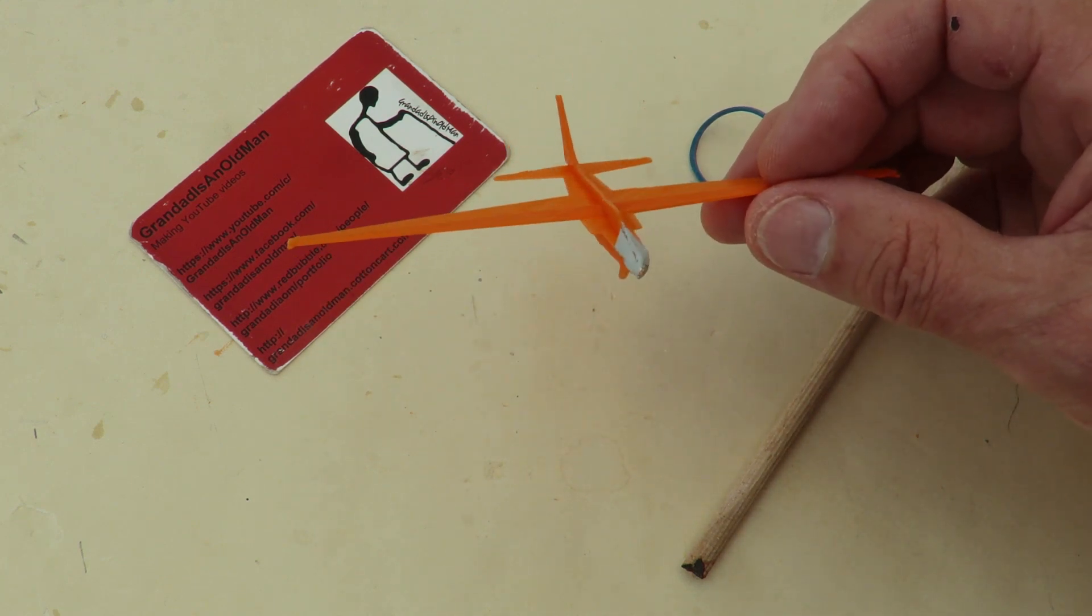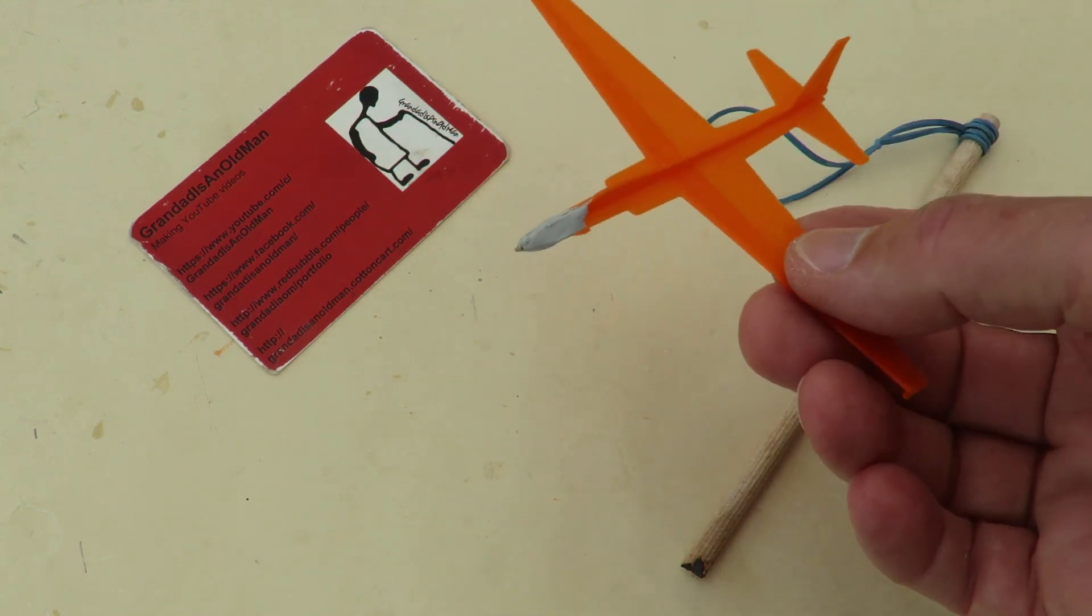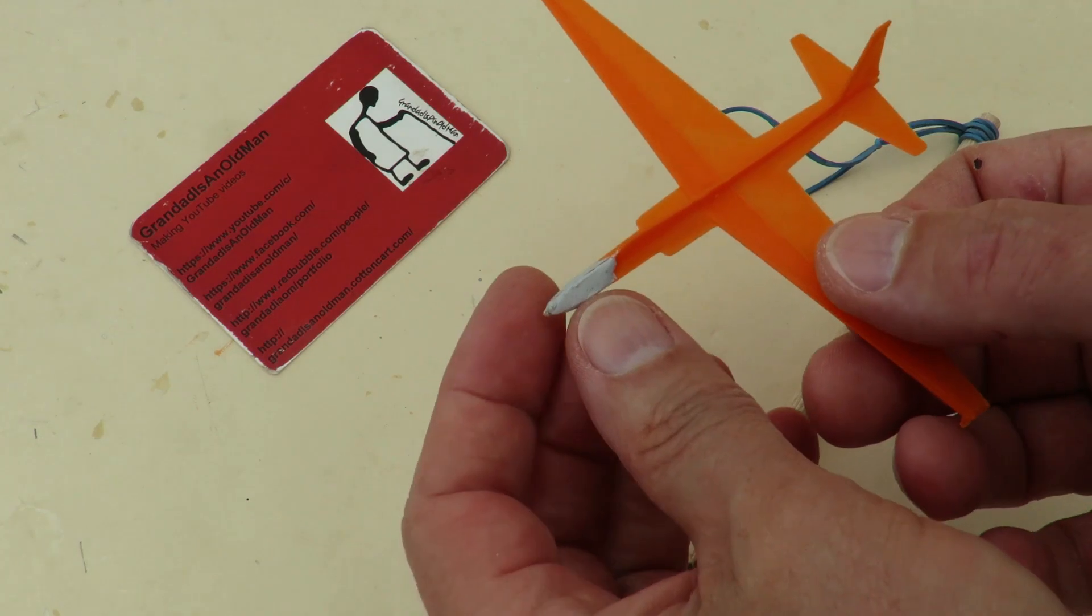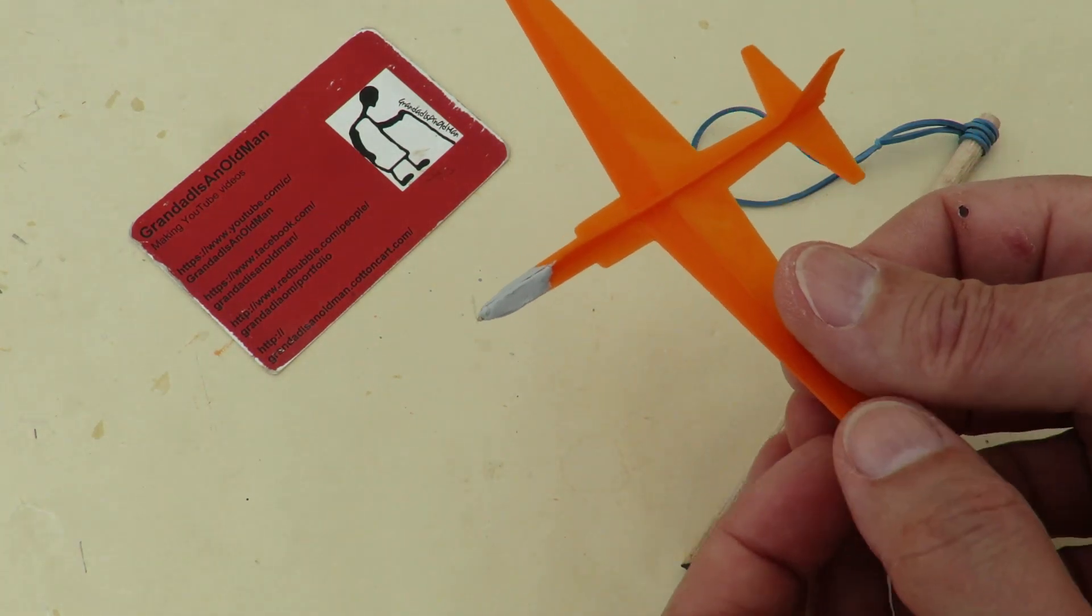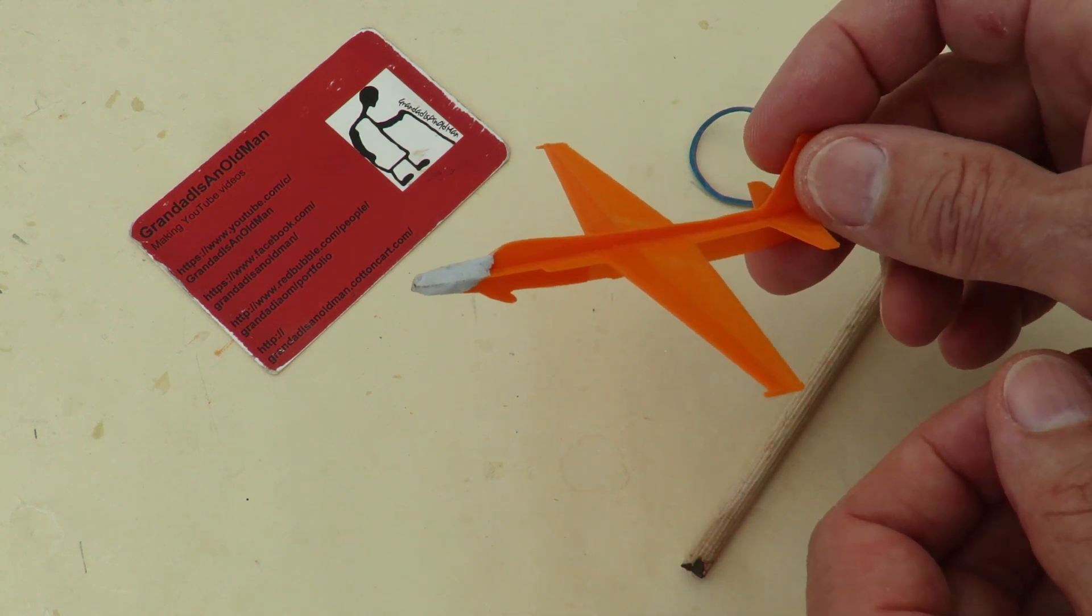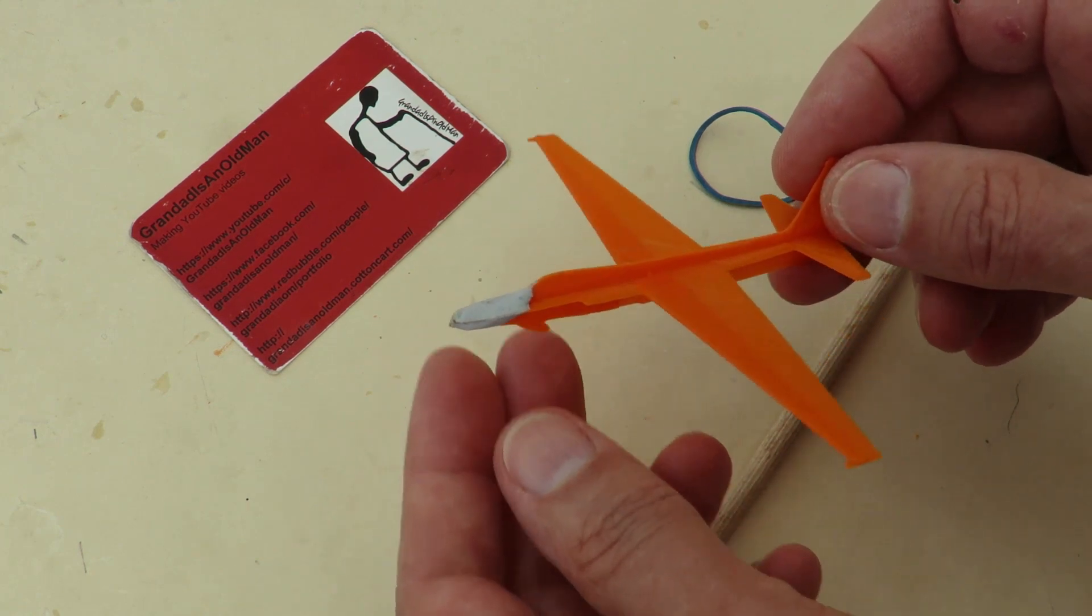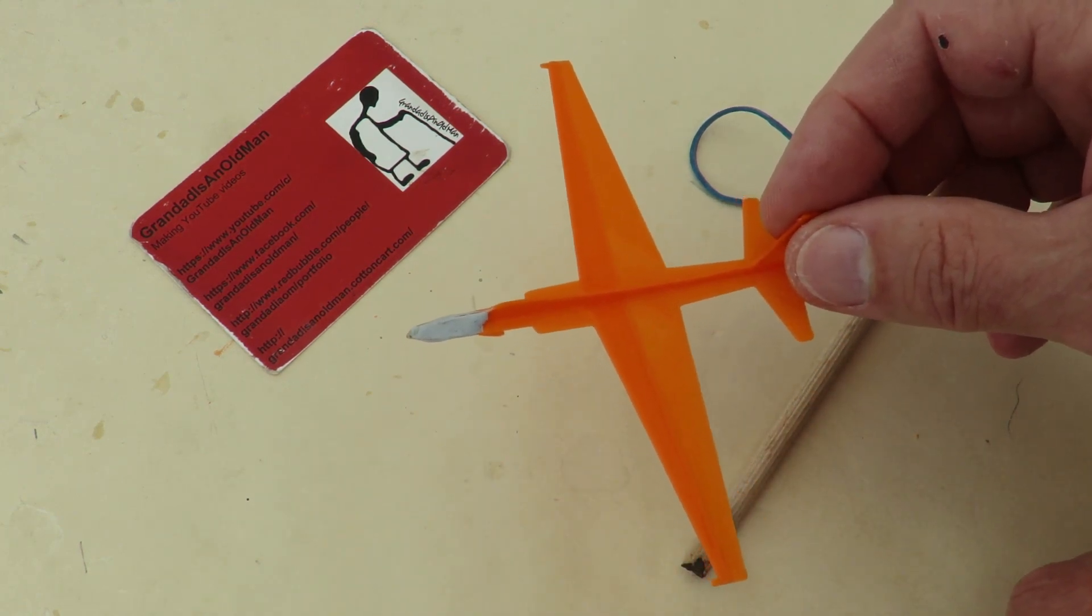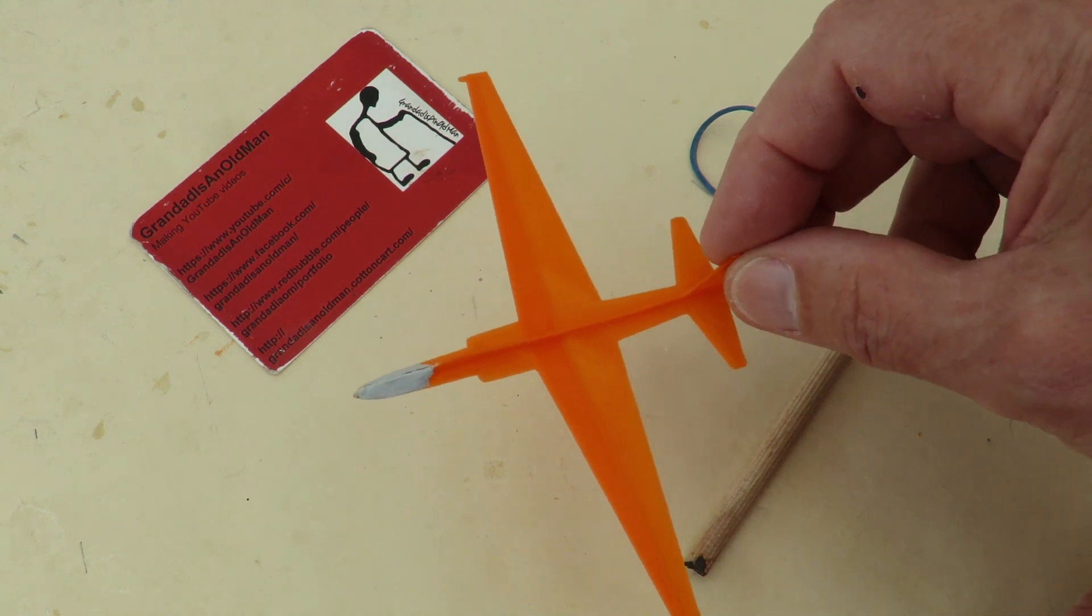And then to give it a bit of balance, I've added a bit of blue tack on the nose there. Could probably have done that with printing, just by printing a bit to go on the front. That's a bit of extra weight. So it could have been entirely 3D printed. But then that allows me to adjust the weight.